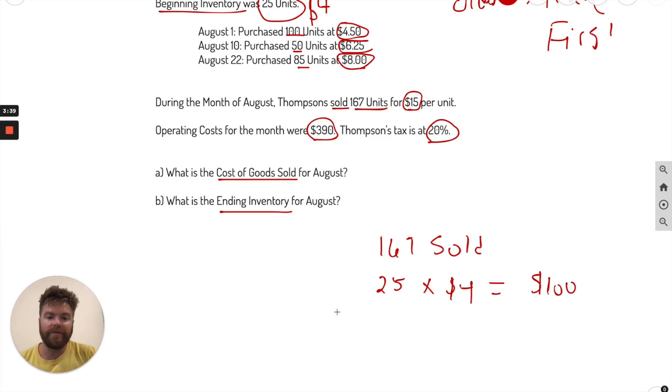Now how many units do we have left? Well, what we have to do is take what we sold, which is 167 minus 25. So now what we have is 142 units remaining to account for. And again, we go to the oldest. So we purchased 100 units. We have 142 left to account for, so we're going to use up all of this right here. We're going to cross it out. 100 at $4.50. So multiply this out. 100 times $4.50, that's $450.